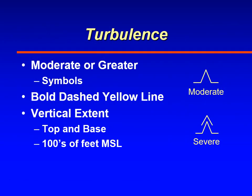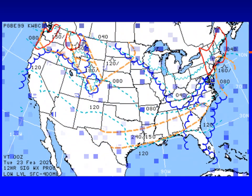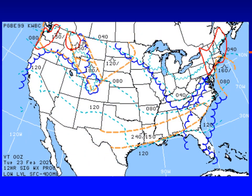Turbulence is shown on this chart using standard symbology — one hat symbol for moderate, and one hat plus another hat on top for severe. This chart forecasts areas of moderate or greater turbulence; light turbulence is not forecast. Bold dashed lines are used to outline areas of turbulence. Here are examples: across South Dakota and North Dakota, you can see an area enclosed in a dashed orange line indicating moderate turbulence.